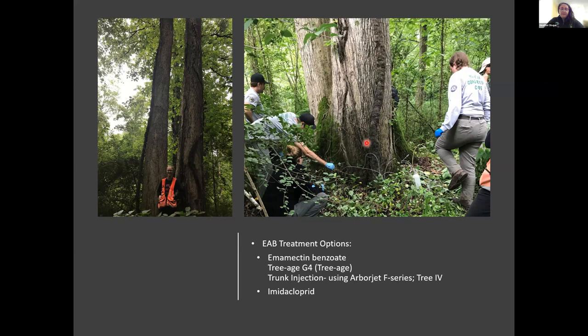We have some questions coming in already. Someone asks about the rate of survival and impact of EAB, and how often trees are treated. We retreat trees once every three years — we stay on top of it and keep the majority of crown. Once populations start to die back and go to really low levels, we might be able to expand it to five years, but currently we're on a three-year cycle for all of our tree treatments.